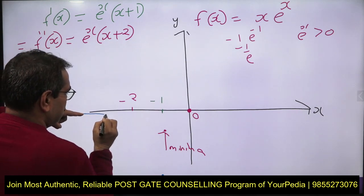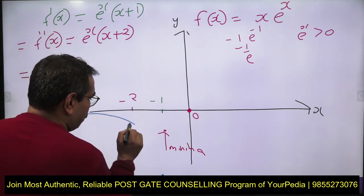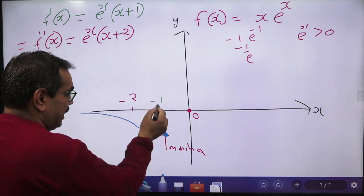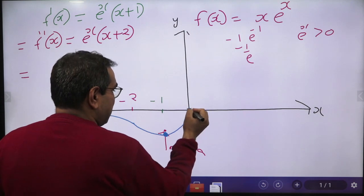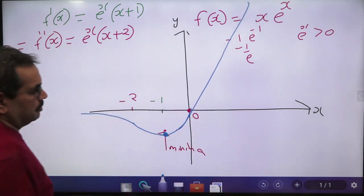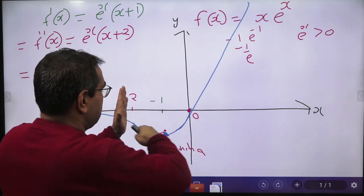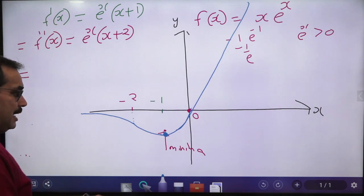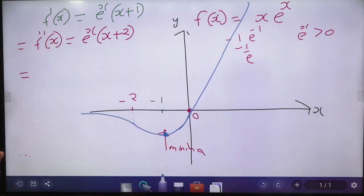On the left side, approaching the x-axis, the concavity is downward. At x = -2, the concavity changes to upward. The minimum occurs at x = -1. After x = -1 the function is increasing with upward concavity, passes through the origin, and continues increasing. Up to x = -1 it is decreasing, and after x = -1 it is increasing — all conditions are satisfied.